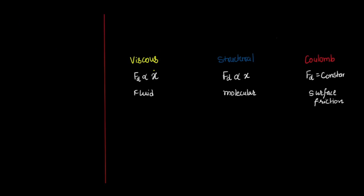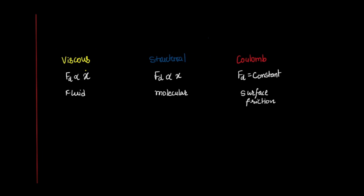An important difference between these three types of damping is as follows. In viscous damping, the damping force is proportional to velocity — if the piston velocity is larger, the viscous force will be more. In structural damping, the damping force is proportional to displacement — a larger beam displacement causes greater intermolecular friction and greater energy dissipation. In Coulomb damping, the damping force remains constant; it is not affected by either velocity or displacement.